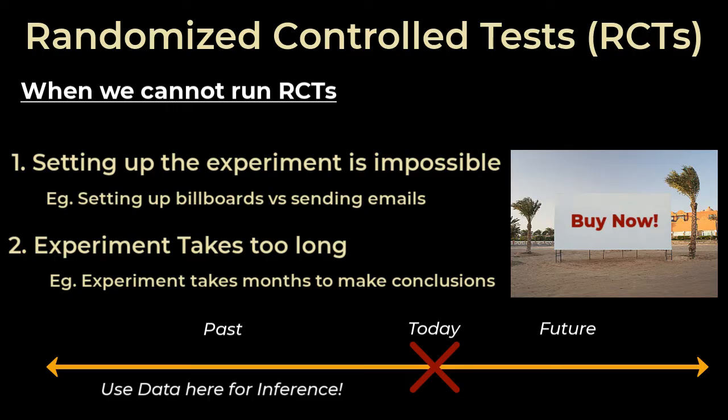Now this is great, but observed data is messy. Randomized control tests are useful because we can control for variables that can affect our causal inference. So if we're going to perform causal inferencing on past data, we need to be able to somehow control for the other factors that plague the observations. Let's talk about three main challenges to causal inferencing.